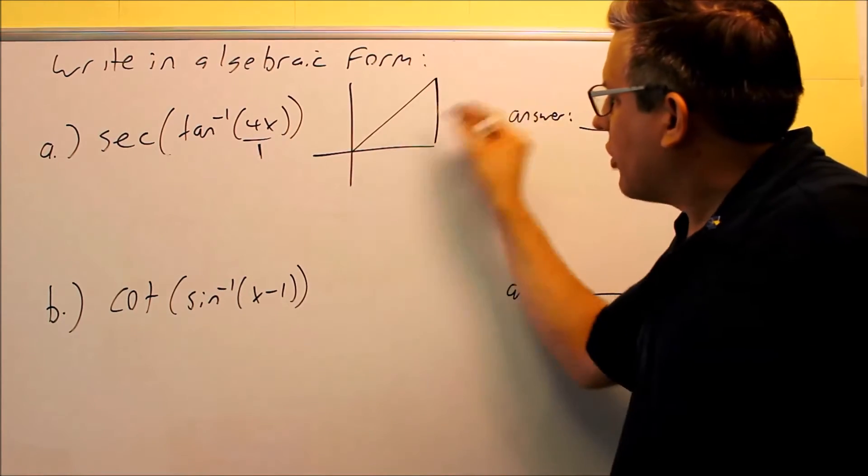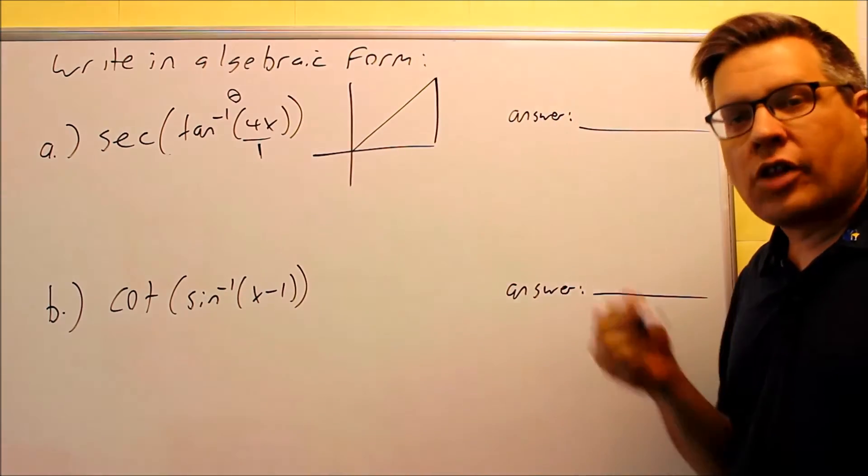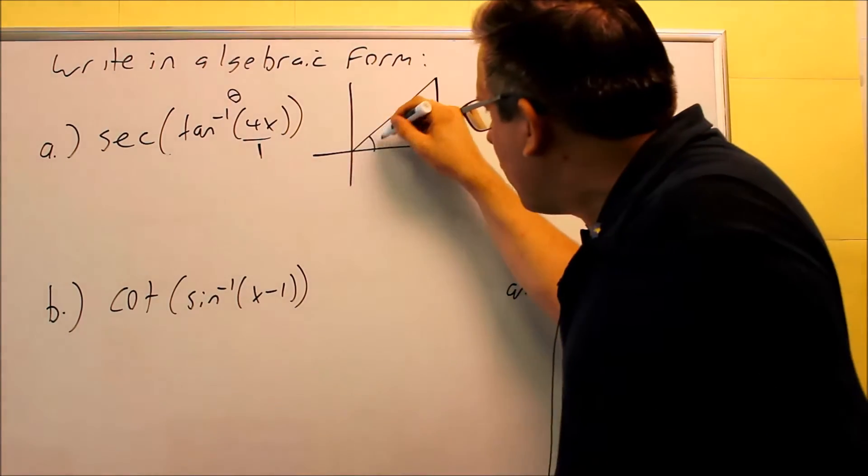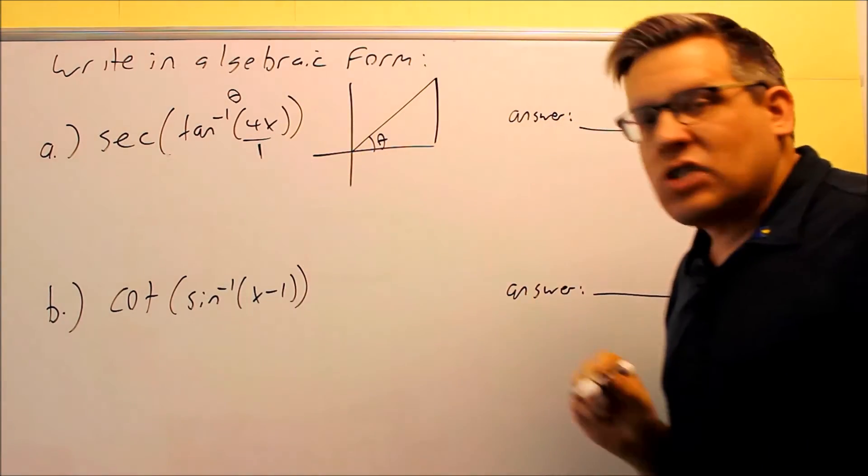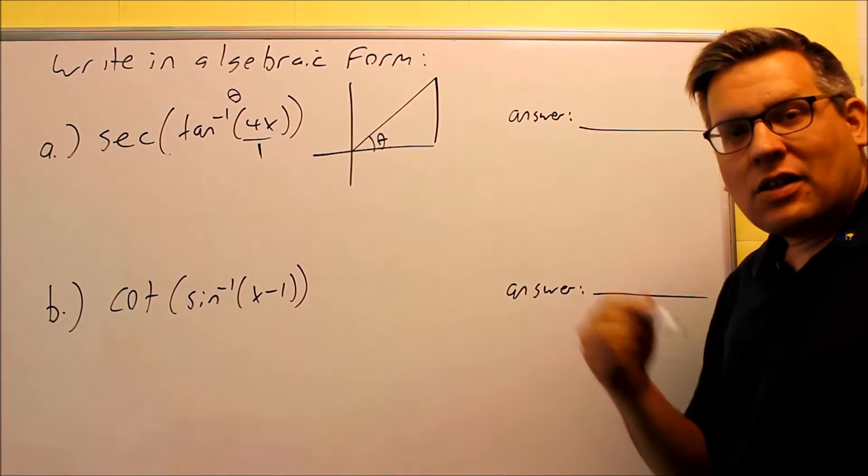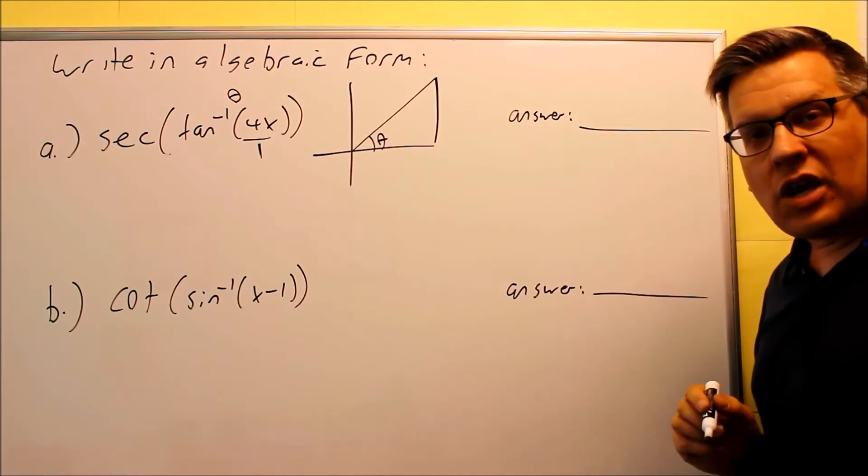We're going to use the definition for tangent. Now, the reason why we can do this and label the sides that way is remember that what's inside the parentheses, all that represents an angle theta, which is actually the same one that we have here. So because theta is equal to inverse tangent, we can turn that into theta equals tangent of 4x, and that's why it allows us to label the sides that way.